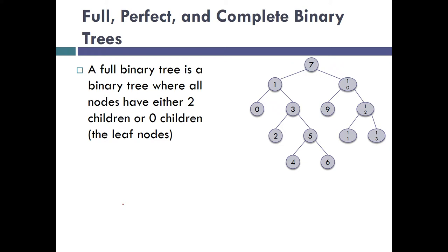A full binary tree is one where all nodes either have two children or no children. Basically, all the non-leaves have both their children slots filled. This example tree is full — nodes 0, 2, 4, 6, 9, 11, 13 have no children, while 7, 1, 3, 5, 10, and 12 all have exactly two children. If I were to remove the node 2, the tree is no longer full because 3 would have a right child but not a left child.